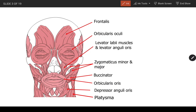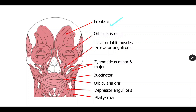The muscles we will cover are: frontalis, orbicularis oculi, buccinator, orbicularis oris, and platysma. The other muscles are also equally important, but we will not go into details of those muscles in this lecture.